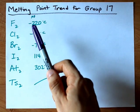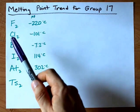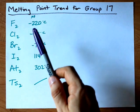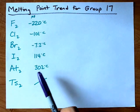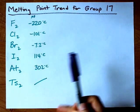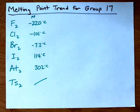Fluorine has a melting point of negative 220, chlorine negative 101, and you'll notice that the melting points are increasing as the size of the atom increases.